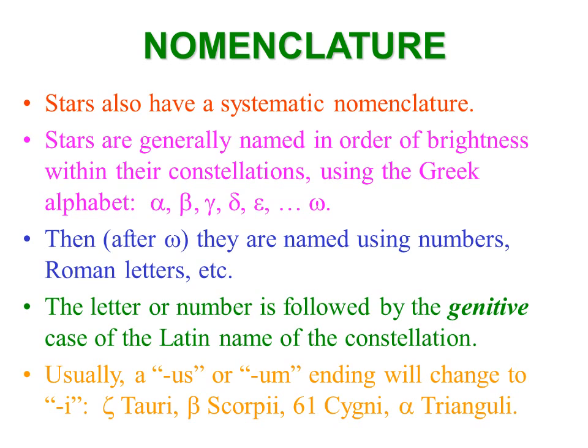The letter or number is followed by the genitive case of the Latin name of the constellation. The genitive is like the English possessive — indicating belonging. Constellation names ending in -us or -um change to -i for the genitive. For example: Zeta Tauri — Zeta in the constellation of Taurus, the bull; Beta Scorpii — the second brightest star in Scorpius, the scorpion; 61 Cygni — too faint for Bayer to name with a letter — in Cygnus the swan; or Alpha Trianguli in Triangulum.